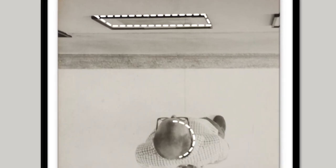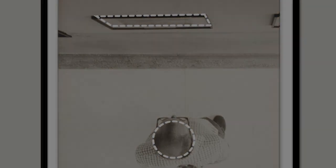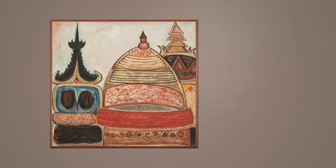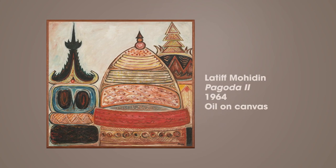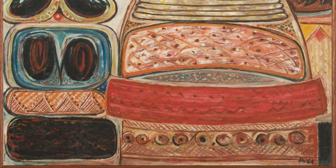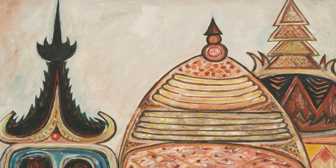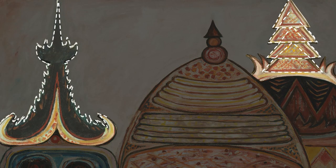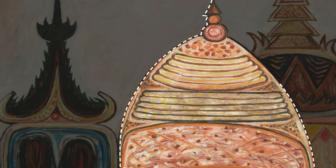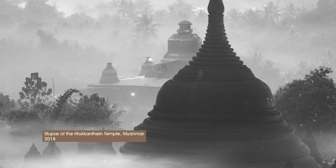Artists sometimes explore the relationships between shapes in their compositions. Let's take a look at line and shape in Pagoda II by the Malaysian artist Latif Mohiddin. The work is an abstracted expression of temple architecture in Southeast Asia. Jagged lines and triangles are used to depict the tiered, ornate temple roofs. A bell-like hemisphere is rendered with sloping lines, evoking a stupa — a key feature of Buddhist architecture.